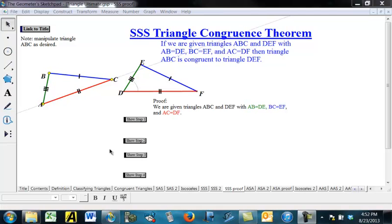So the proof is we're given triangles ABC and DEF with AB equal to DE, BC equal to EF, and AC equal to DF. They're marked there, and they're color-coded with the corresponding sides congruent.